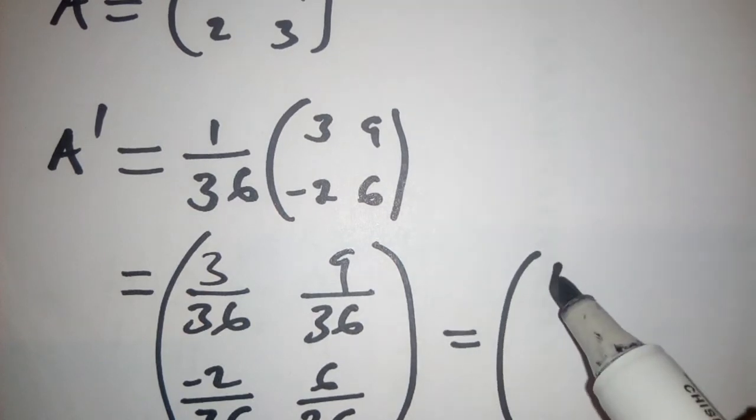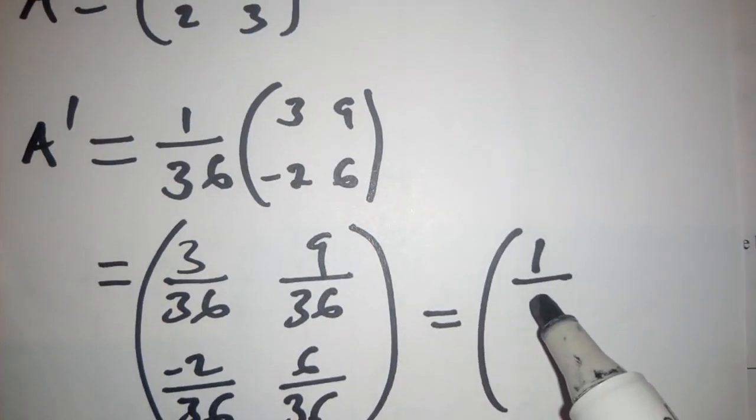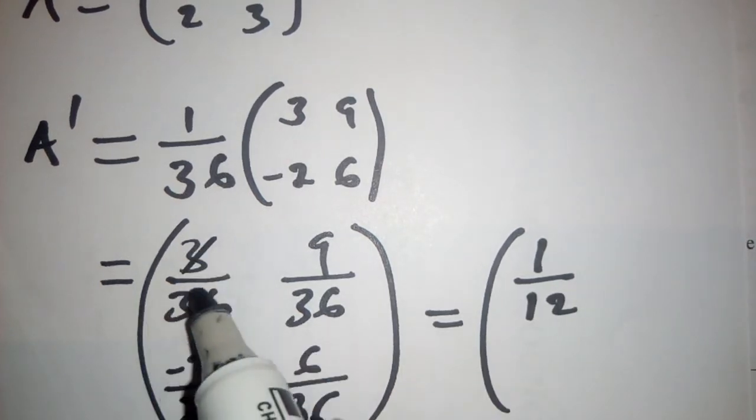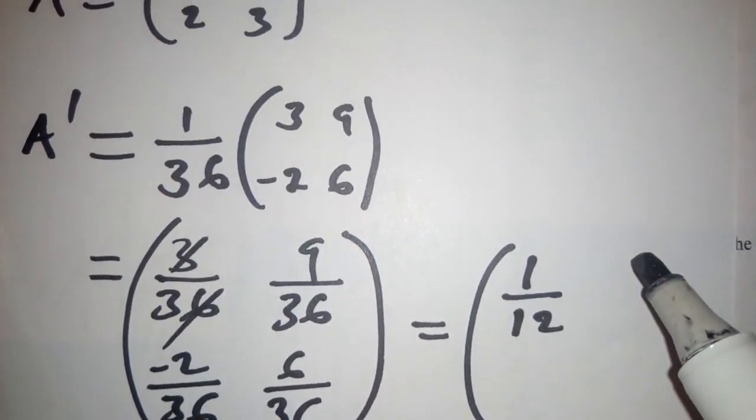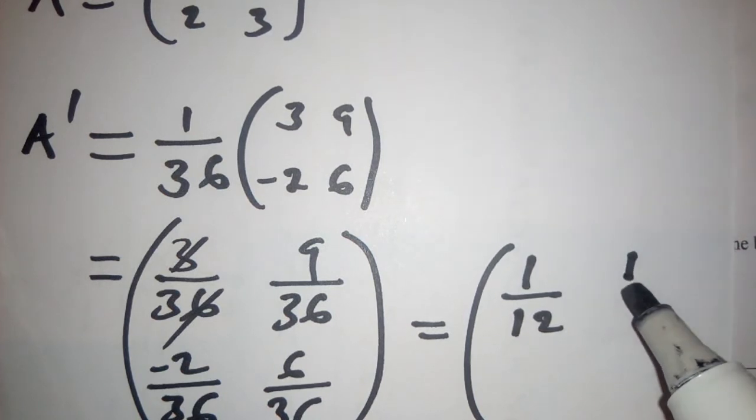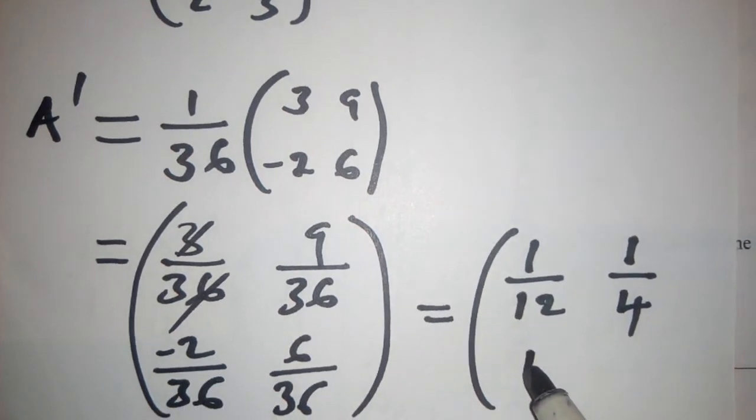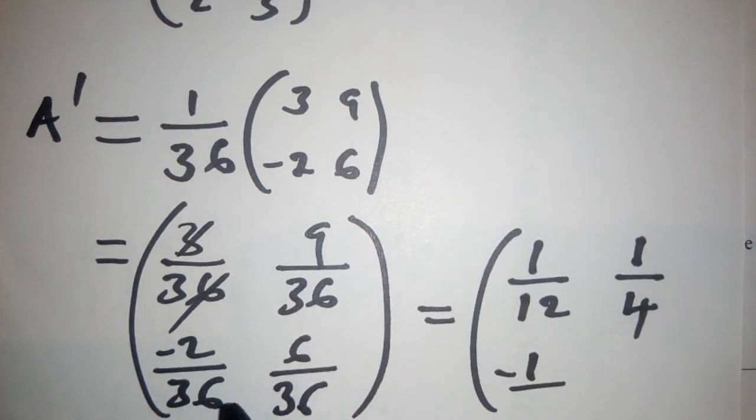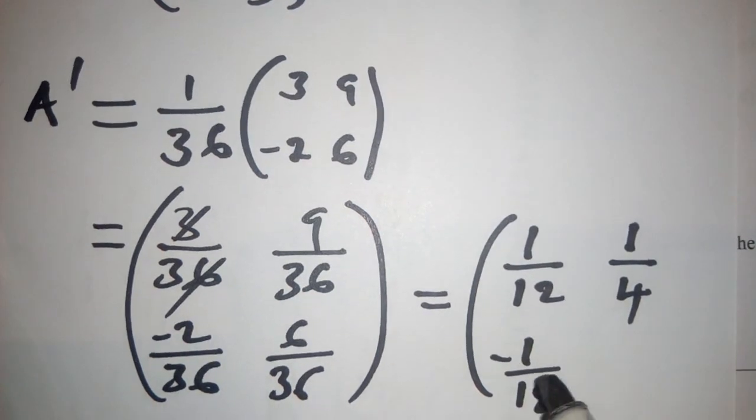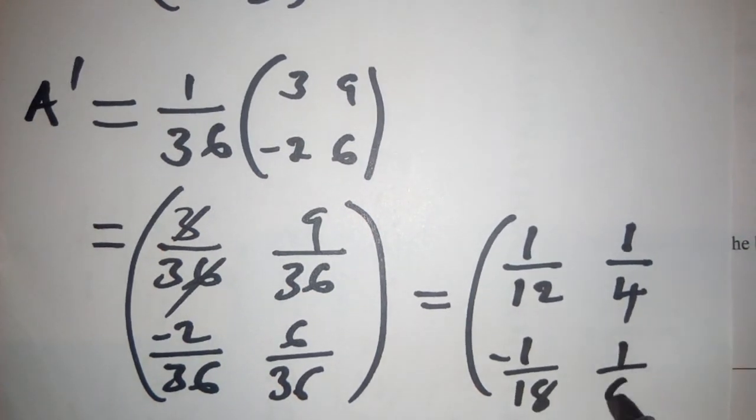And thereafter, we have 1 over 12, so 3 into 36 it would look like this. And then there, 9, we have 1 over 4, here we have negative 1 over 18, and here we have 1 over 6.